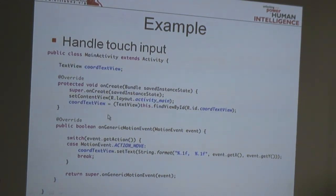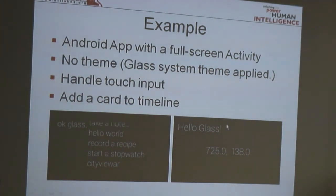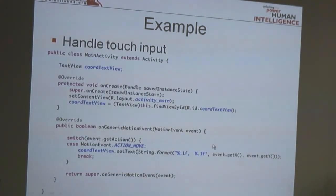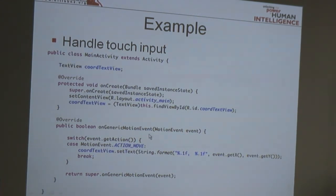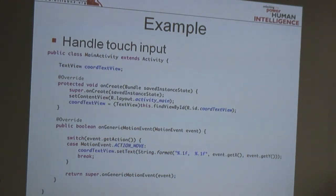You create your own Activity, and when that Activity is created, you set the content view, which is basically a layout of your user interface — defining text labels and images if you have them. Once you've defined how your view looks, you can use the callback 'onGenericMotionEvent,' which is a little different from what you'd use on an Android device.